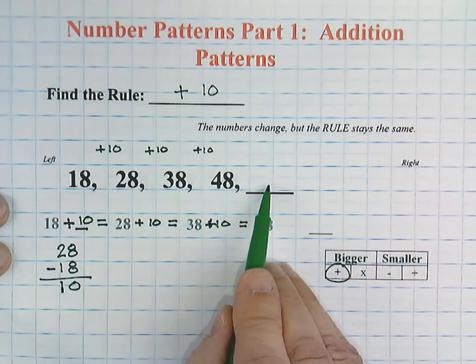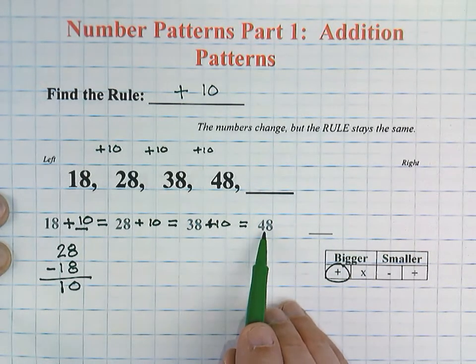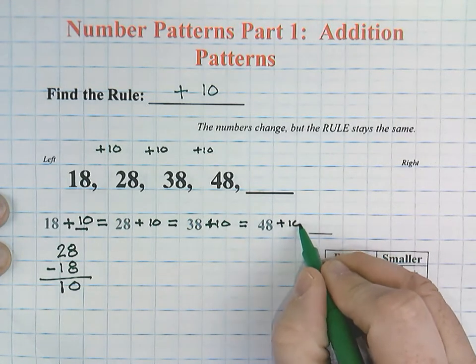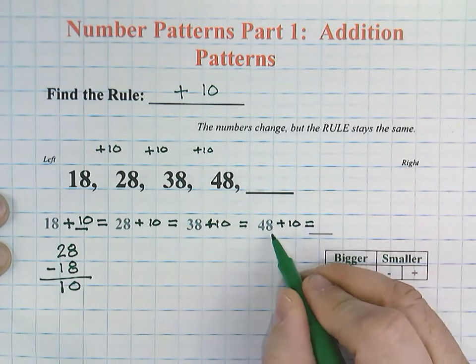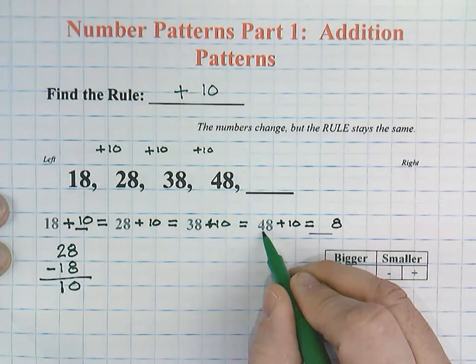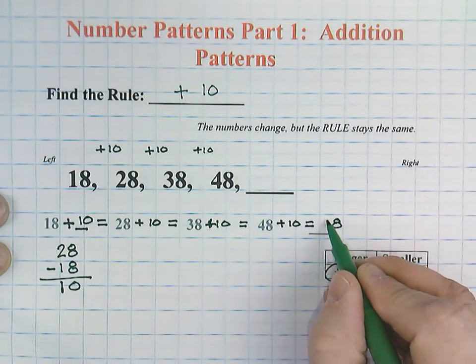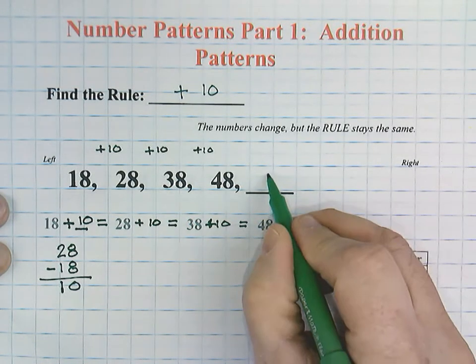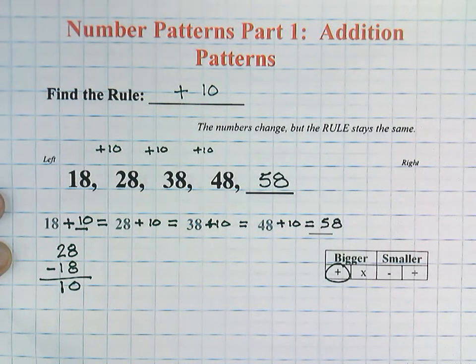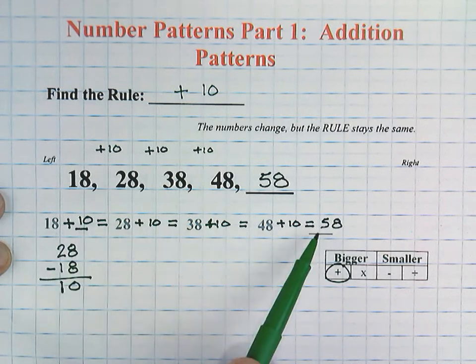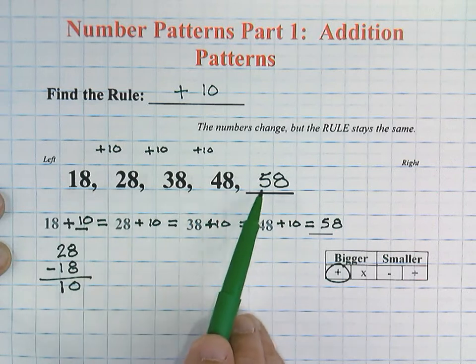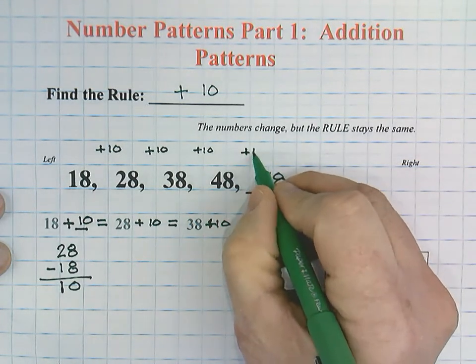Now our job is to figure out the blank. We're going to continue the same process. 48 plus 10: 8 plus the 0 in the 1s would be 8, and the 4 in the 10s plus 1 would be 5. So our last number in the pattern would be 58. You can write out the equations or use mental math, but we're showing the thought process.